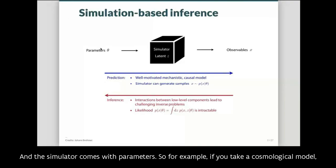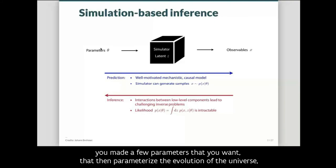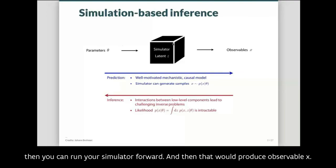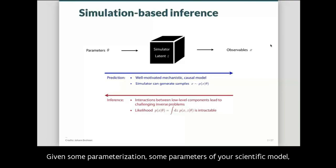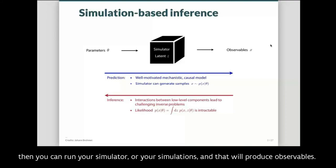For example, if you take a cosmological model you may have a few parameters that parametrize the evolution of the universe. You can then run your simulator forward and that would produce observables. It's very easy to go from left to right — this is what we call prediction: given some parameters of your scientific model, you run your simulations and produce observables.